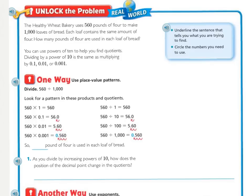Now let's unlock the problem. The Healthy Wheat Bakery uses 560 pounds of flour to make 1,000 loaves of bread. Each loaf contains the same amount of flour. How many pounds of flour are used in each loaf? You should underline how many pounds of flour are used in each loaf, and circle the numbers 560 and 1,000. We know we are dividing because we're talking about equal amounts being split into each loaf.